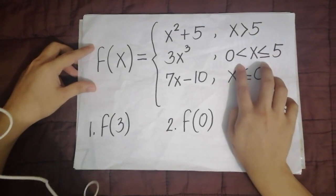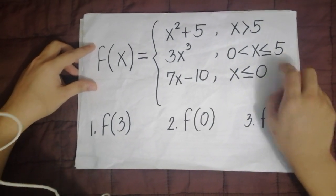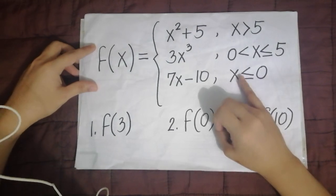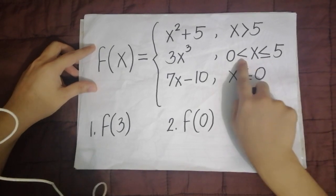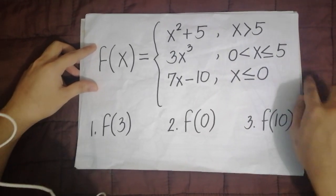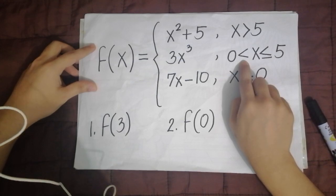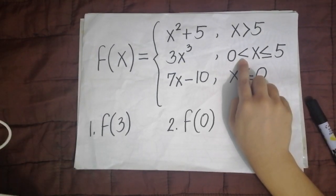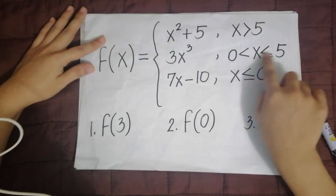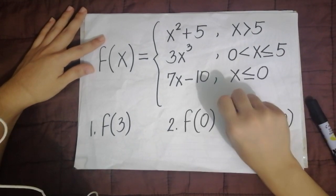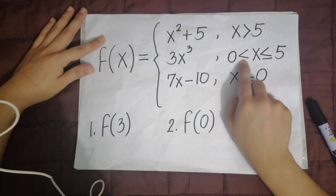Then for the second restriction, it looks confusing but it just means from 0 to 5 — so 0, 1, 2, 3, 4, 5. But remember, the equal sign matters. If there is an equal sign, then 5 is included in that bracket. But for 0, since there is no equal sign on its side — only less than — that means 0 is not included. So the numbers that fall here are 1, 2, 3, 4, 5. Five is included because of the equal sign; 0 is excluded because there is no equal sign.